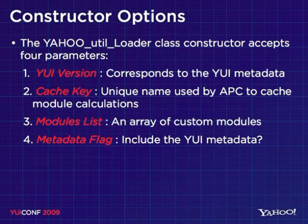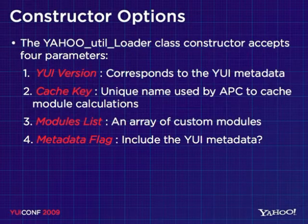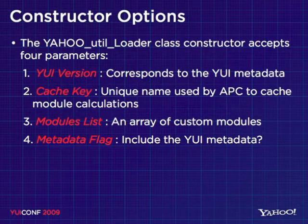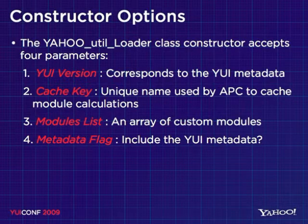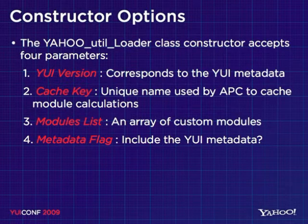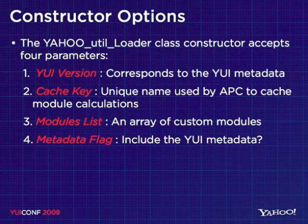I want to cover some of the options inside the constructor to that PHP class. The class is yahoo_util_loader, and there are four parameters. The first one is the only required one — the YUI version number. This corresponds to the YUI metadata you intend to load so that it knows how to calculate the dependencies for the page.